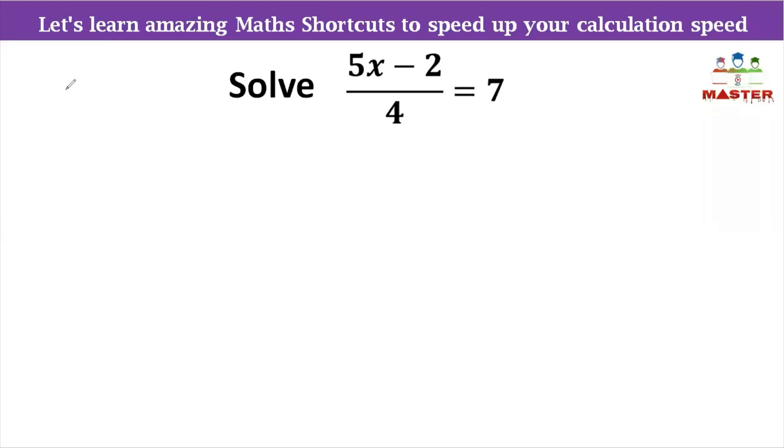Hi friends, in this video, we are going to take a competitive example of a problem that we can use a quick answer method to find out. Now, we will see the problem here. 5x minus 2 divided by 4 is equal to 7.